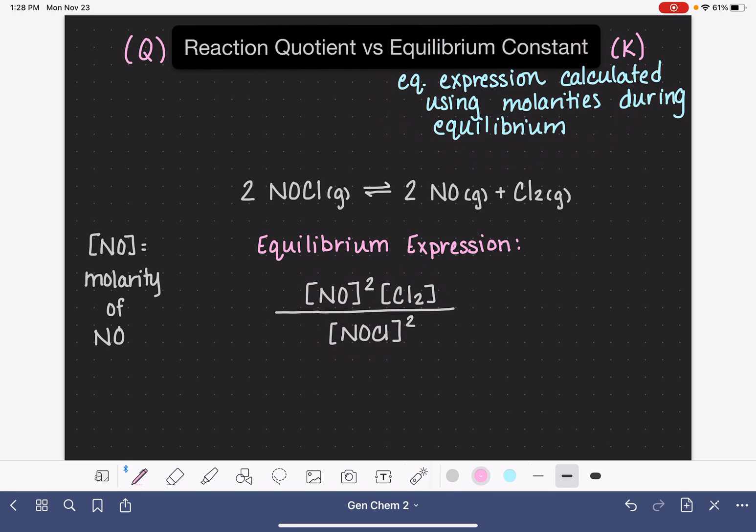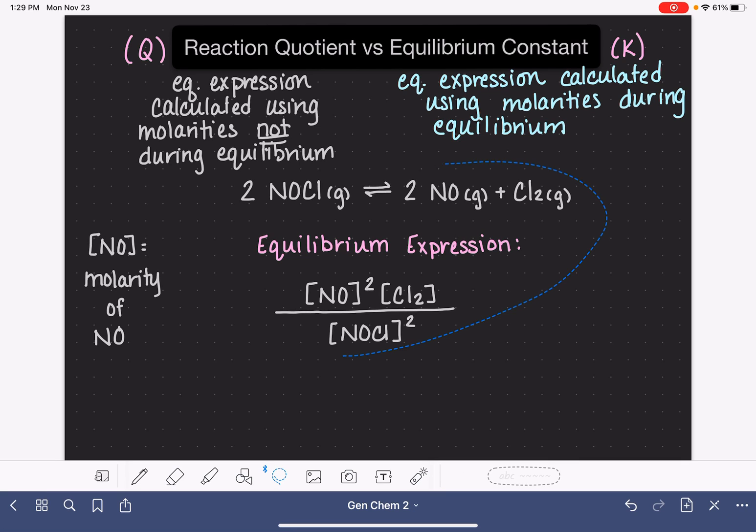then we call it a reaction quotient. So reaction quotient is going to be an equilibrium expression that is calculated using molarities that are taken not during equilibrium. So maybe before the system reaches equilibrium, or maybe something happens to the system that causes it to lose its equilibrium,